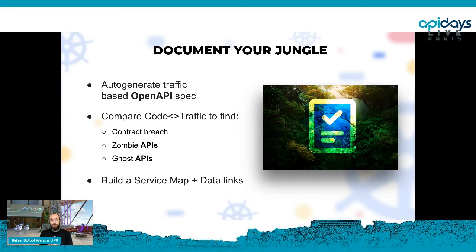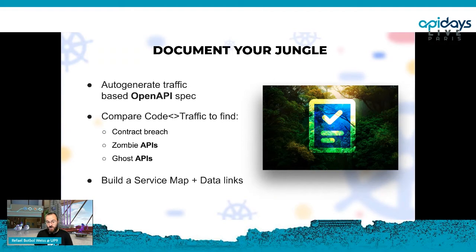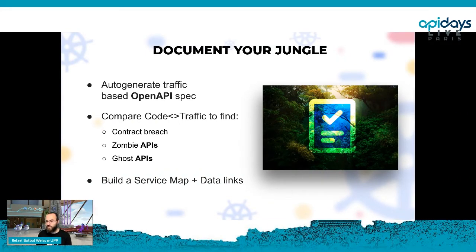The last topic: how do you document that jungle? Think of all the microservices, all the APIs communicating with each other with data links. One of our customers has an on-prem solution and needs to provide API documentation for their customers to do the last-mile integration. How do you continuously document it? Everyone can do version one, but version two is a pain. How do you track contract breaches — for example, a customer misusing APIs and passing data not according to the contract?